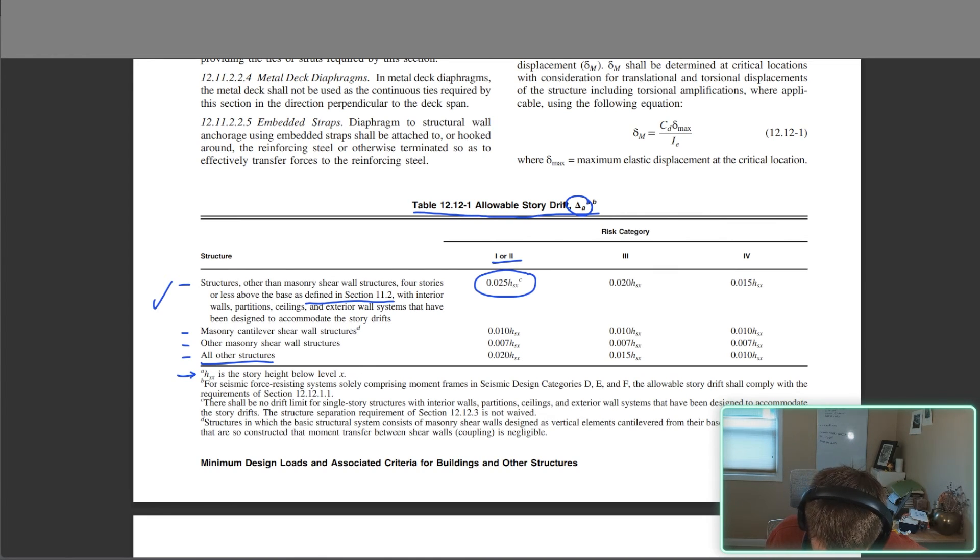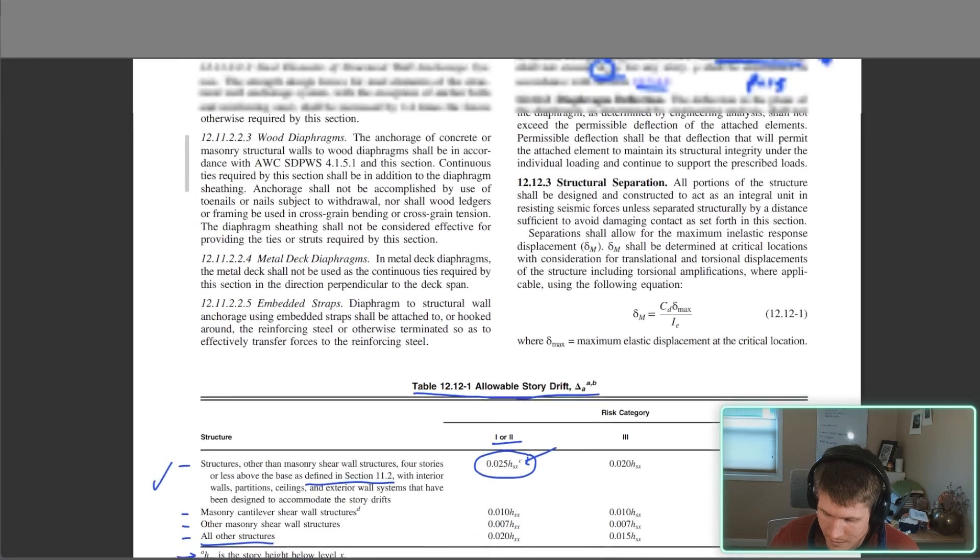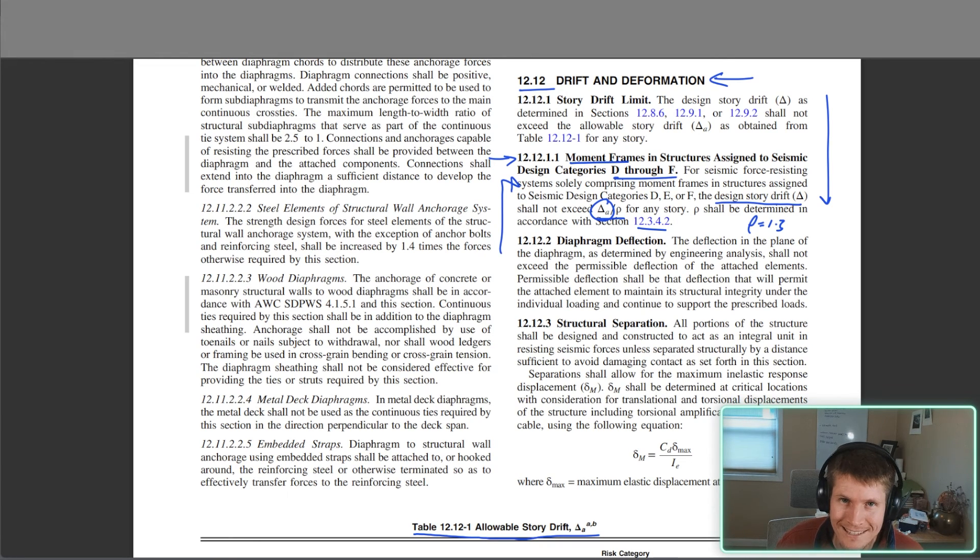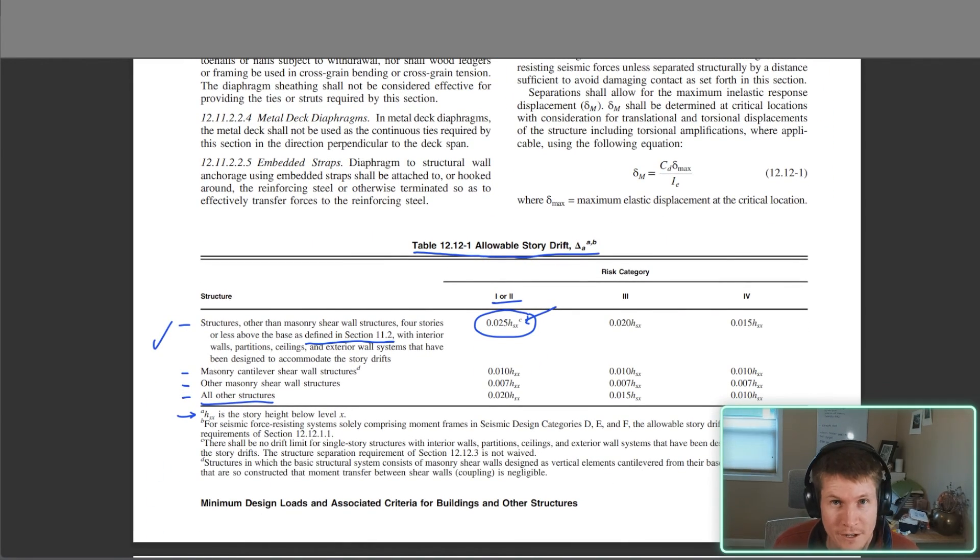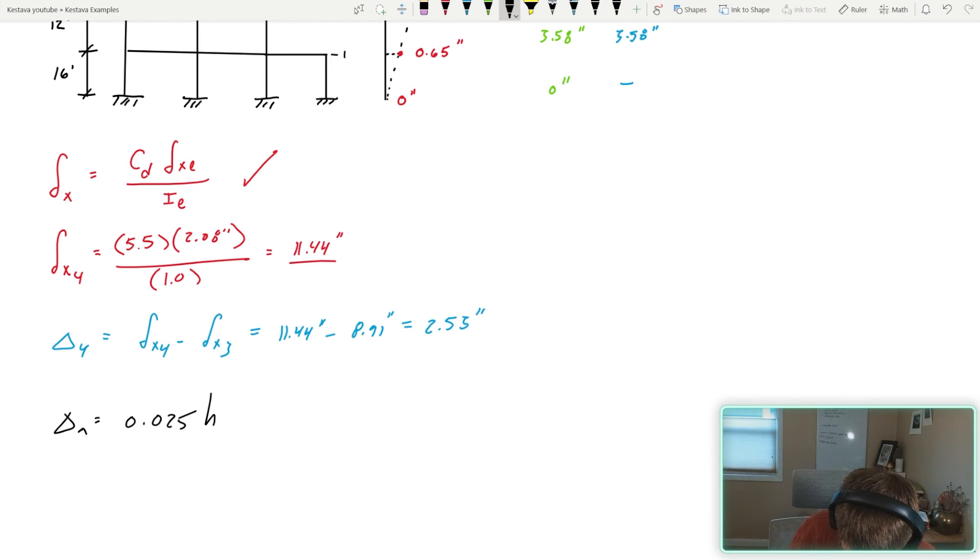Always look at the footnotes. H sub SX is the story height below level X. I'll show you what that means in a moment, but that's really straightforward. And then we also have footnote C, there shall be no drift limit for single story structures. Well, it doesn't matter. We're not a single story structure, so that doesn't matter to us. And then we have in the title footnote B. Footnote A and B. A is that, we already know that. B, for seismic force resisting systems solely comprising of moment frames in seismic design category D, E, and F, the allowable story drift shall comply with the requirements of 12.12.1.1. Oh my gosh, it's circular. They're bringing us back up to say, hey, if you didn't initially start up here and read the code like you were supposed to, well, we have a backup. You should be reading these footnotes. If you just scan straight down to this table, which will take you back up there to make sure that you are properly applying rho for your system.